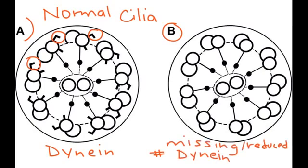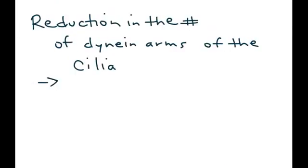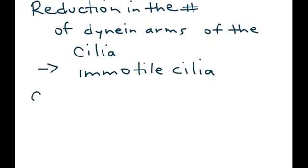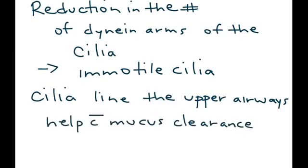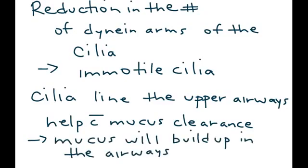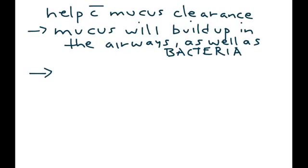If you have a reduction in the number of dynein arms, the primary effect is that it creates immotile cilia. Why is this important? Cilia line the upper airways and they help with mucus clearance. So if these cilia are not working properly — if they're immotile — you will not get mucus cleared from the upper airways. Mucus and bacteria will build up, leading to chronic respiratory infections.